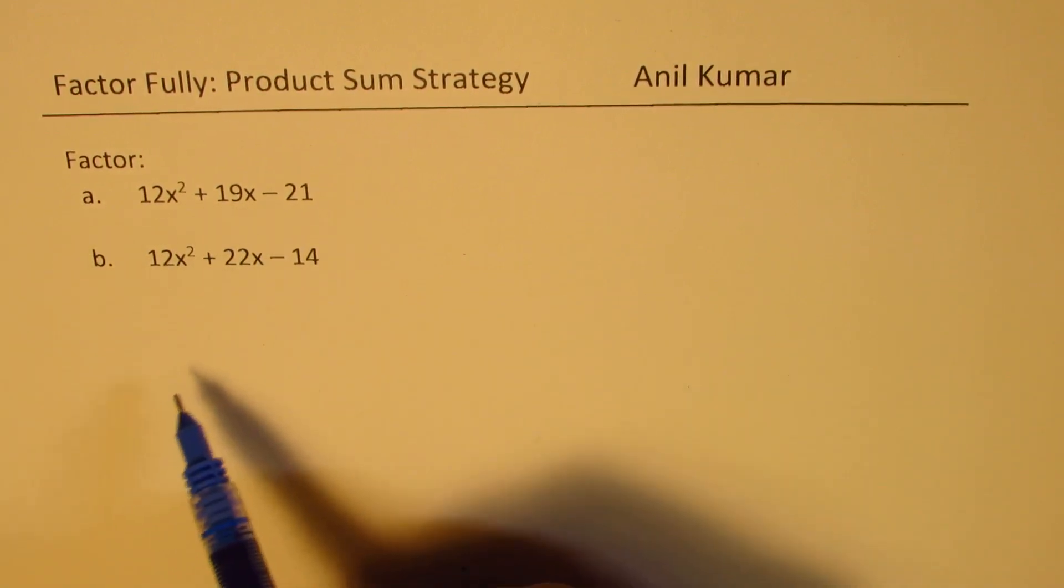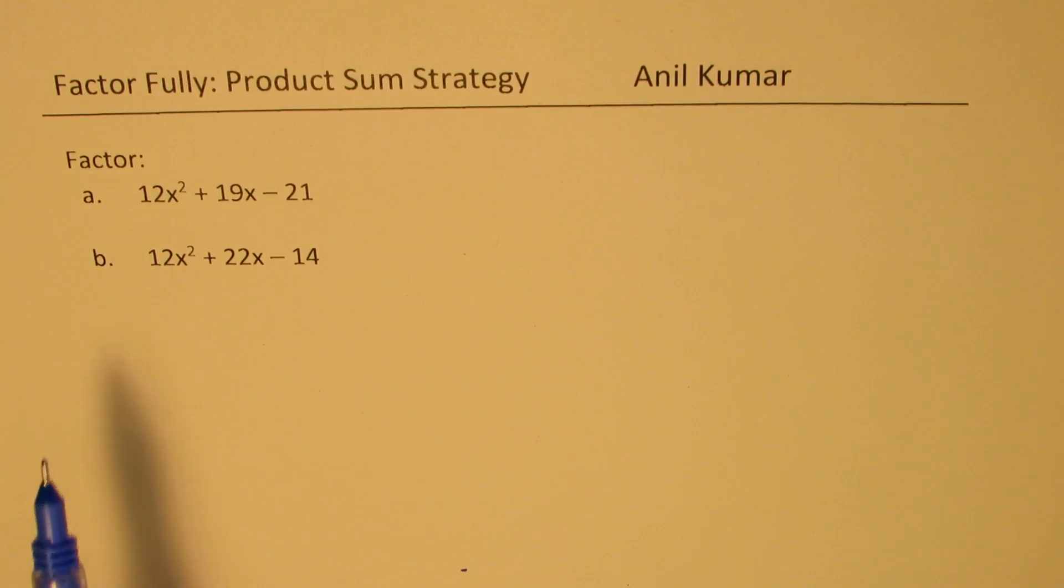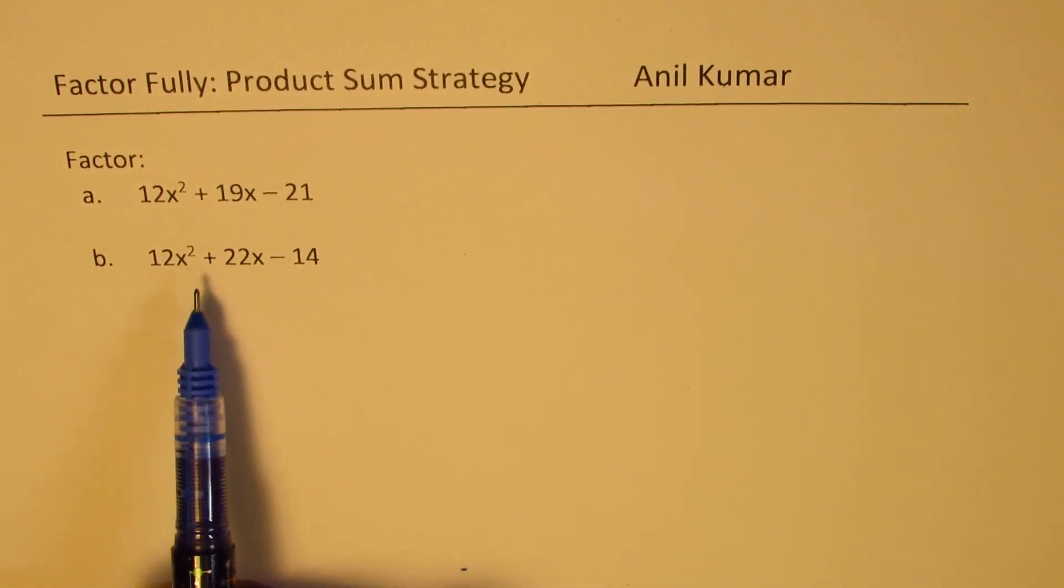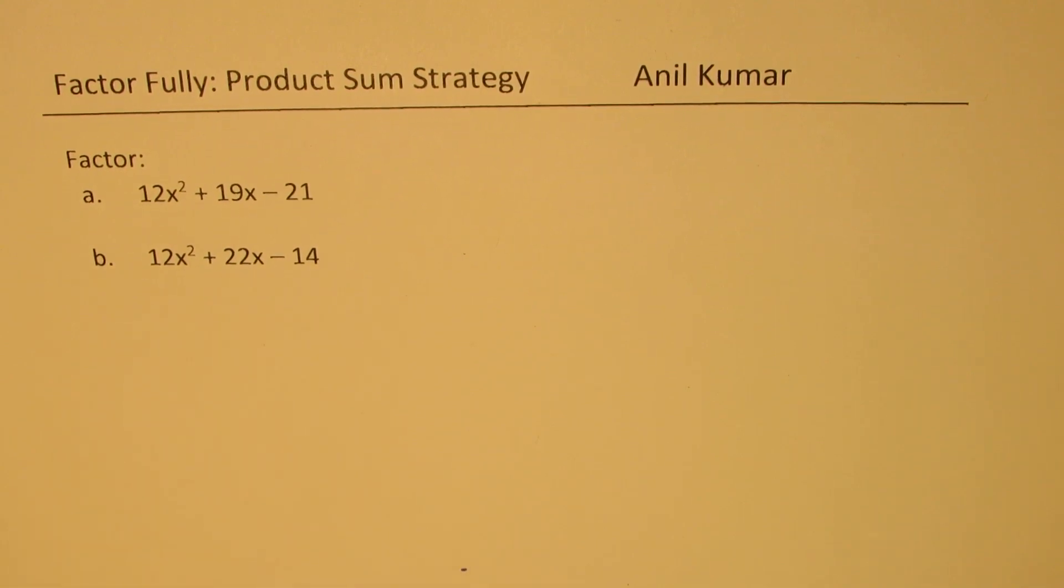So we have taken two very similar trinomials. One of them is 12x² + 19x - 21. The other one is 12x² + 22x - 14.